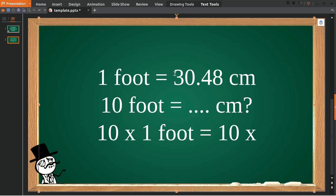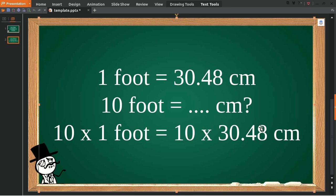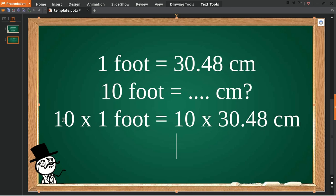with this number, 30.48 centimeters. Now, 10 multiplied by 1 is equal to 10, which is 10 feet, and 10 multiplied